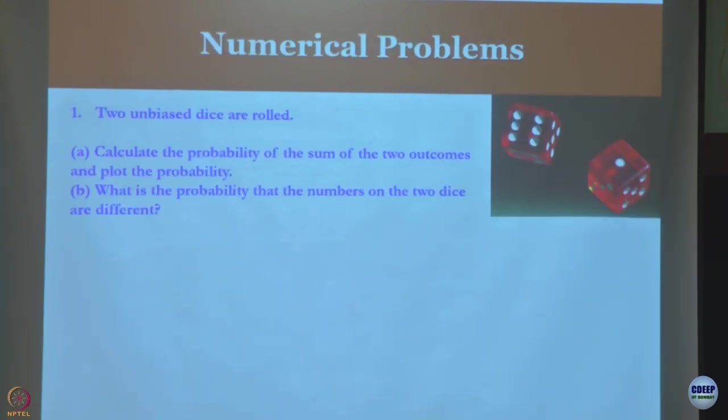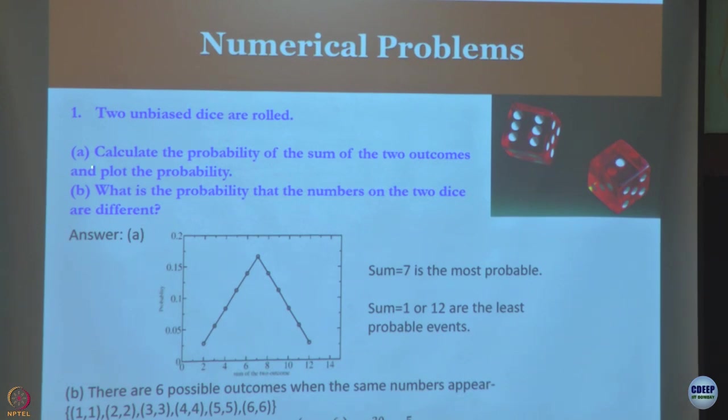I have some problems for you to do. Two unbiased dice are rolled - calculate the probability, which we already did. What is the probability of the numbers? This is a simple thing. Now I will give you an interesting result: what is the probability that numbers of the two dice are different? If I sum the two outcomes and plot the probability, of course nothing can be below two, nothing can be above twelve, but this has an interesting structure.